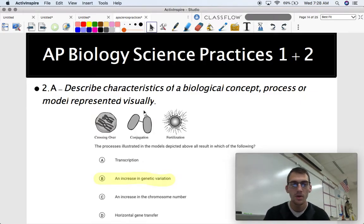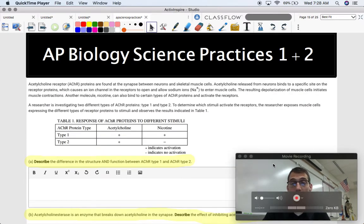And that would be an increase in genetic variation. So knowing what these three things are, even if they listed them out it would be the same thing, but it counts as a 2.A because it's represented visually. You can see the two bacterial cells and the chromosomes crossing over and the sperm and the egg, that kind of stuff. But yeah, that's 2.A. Pretty straightforward.